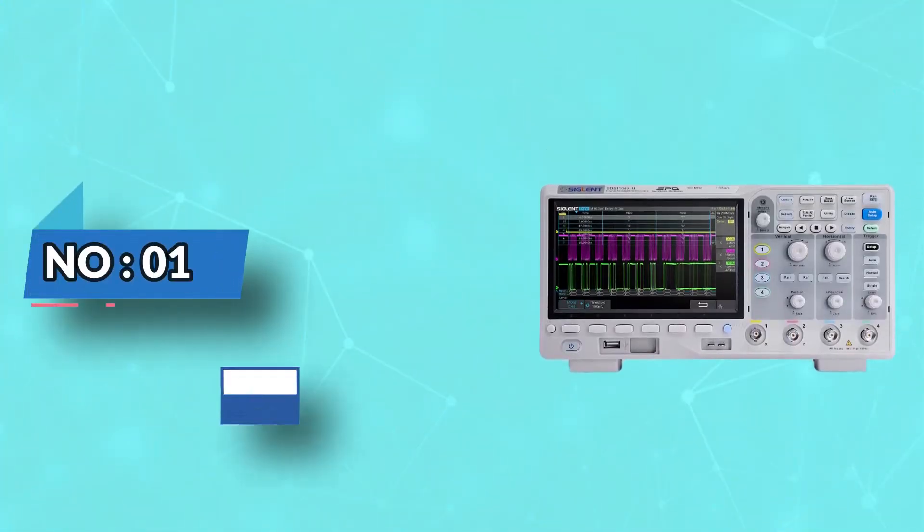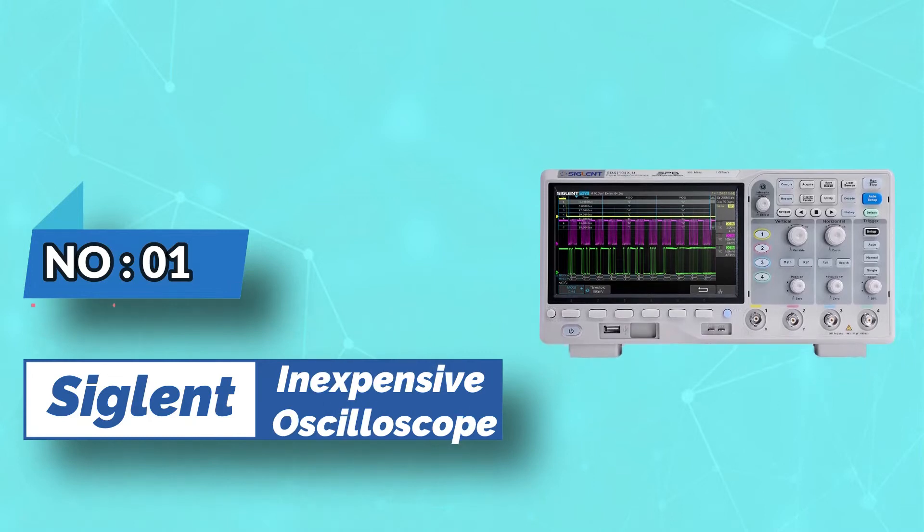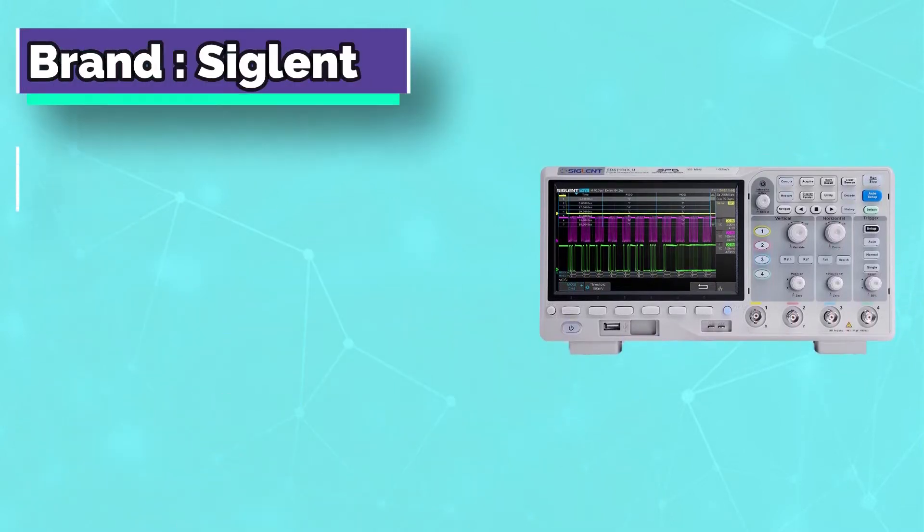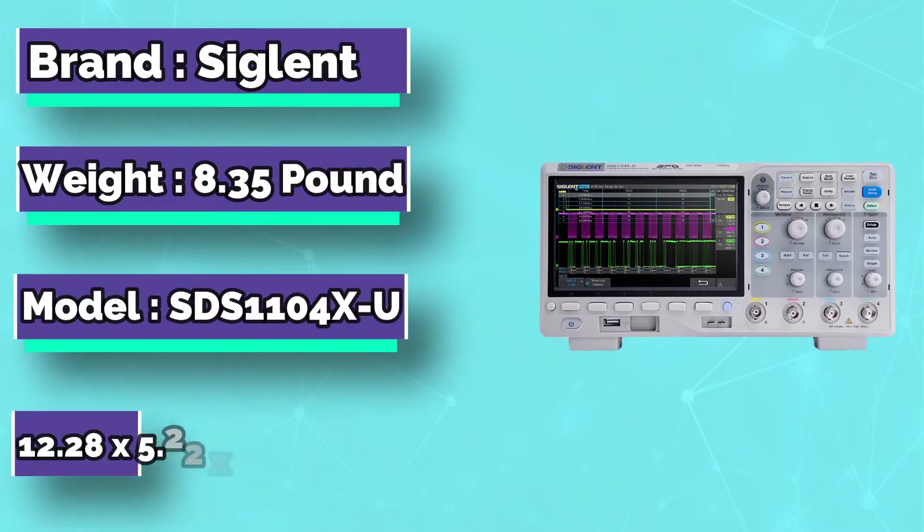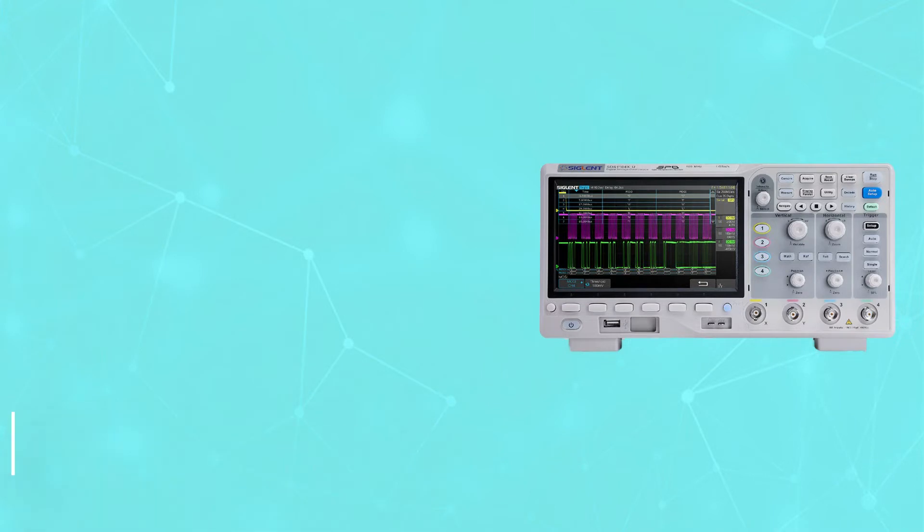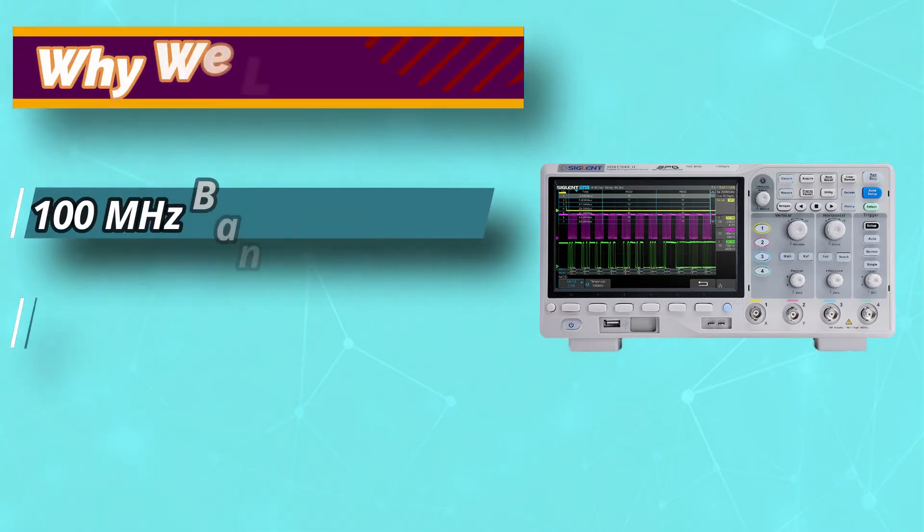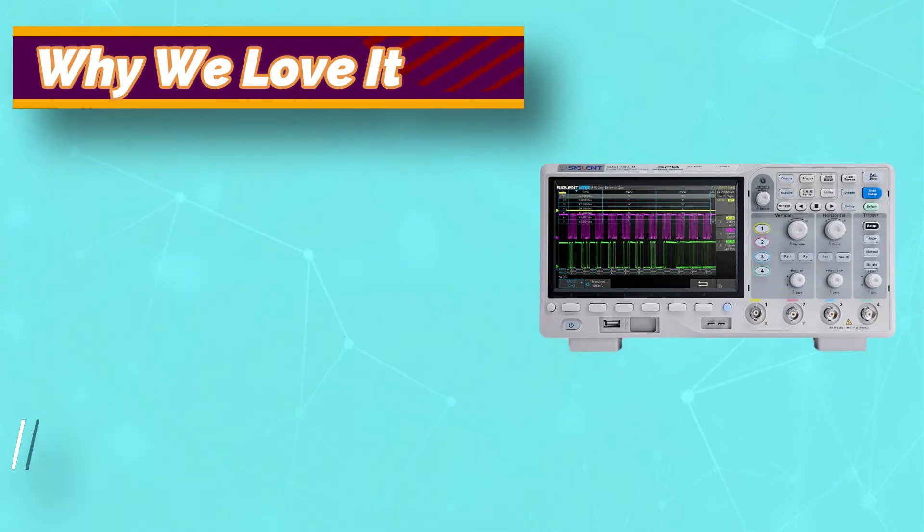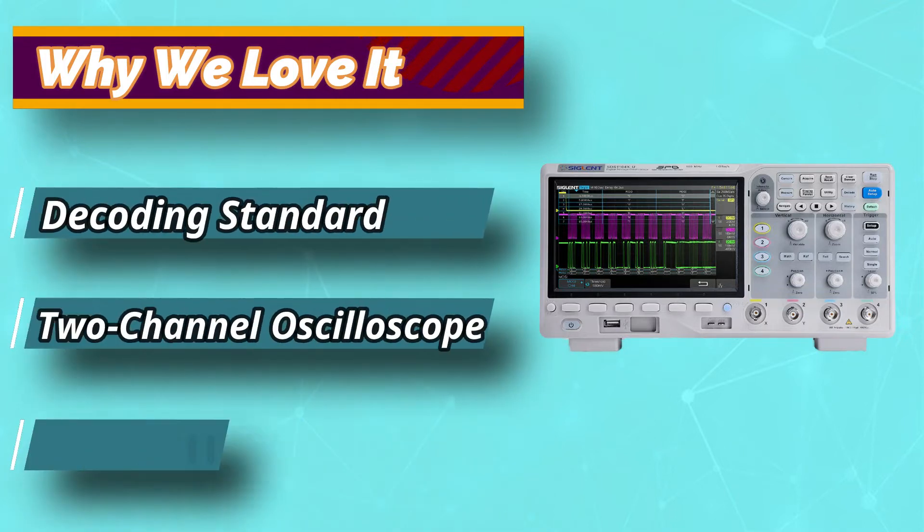Number 1: Siglent Inexpensive Oscilloscope. Siglent's SDS-1102CML Plus is the new improved version of the popular SDS-1102CML. 100MHz, 2-channel digital oscilloscope for electronics applications such as product design, assembly lines, repair and servicing, and electrical engineering education.